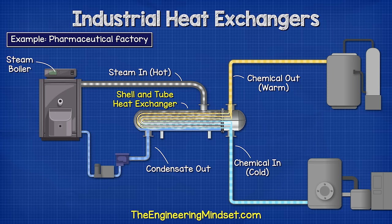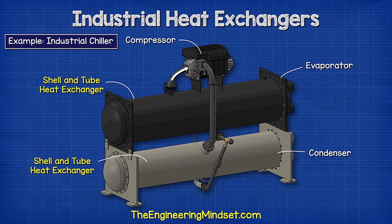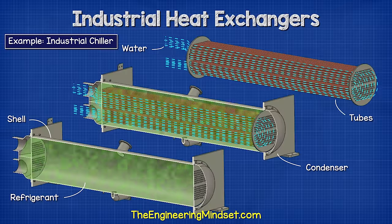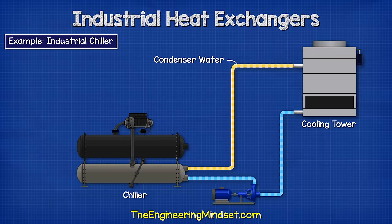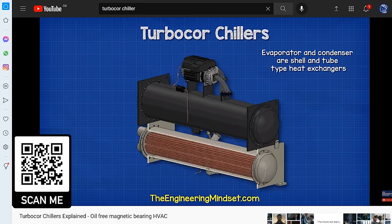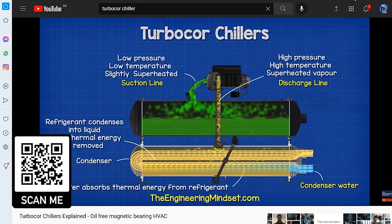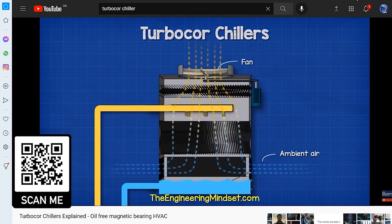Additionally, these are used in refrigeration applications like industrial chillers. We have water flowing through the tubes, with the hot refrigerant in the shell. The water absorbs the heat of the refrigerant so it can transport this to the cooling tower, where it is ejected into the atmosphere. The water returns cooler to pick up more unwanted thermal energy from the chiller. We have covered how chillers work in great detail previously — I'll leave a link in the video description below.